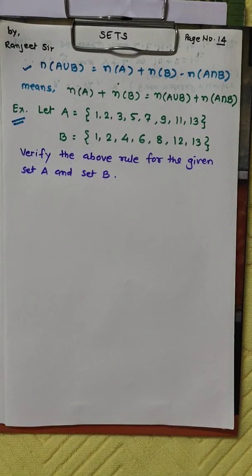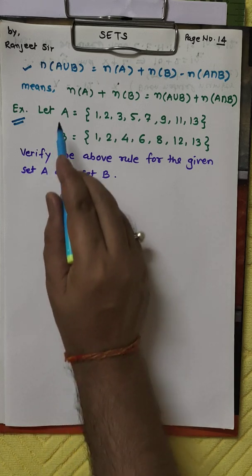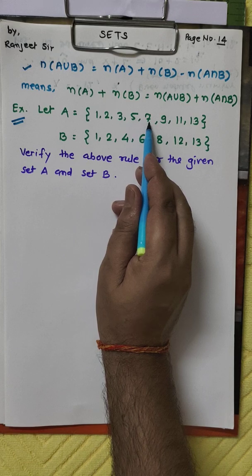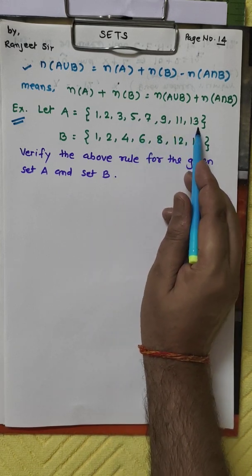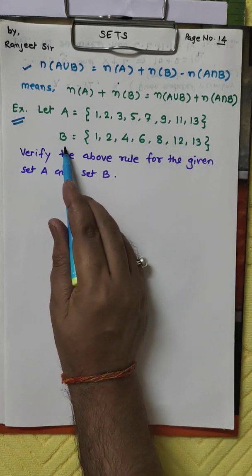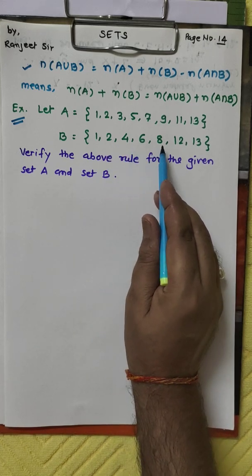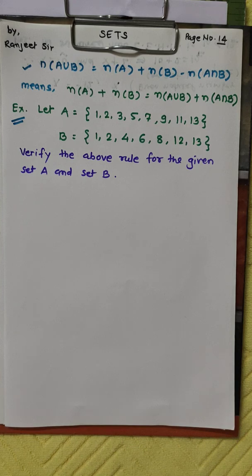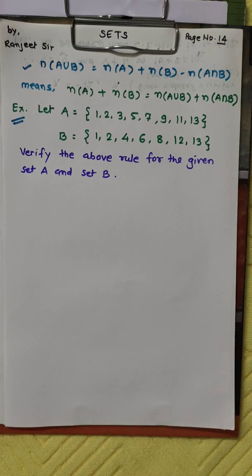Let set A = {1, 2, 3, 5, 7, 9, 11, 13} and set B = {1, 2, 4, 6, 8, 12, 30}. Now verify the above rule for the given sets A and B.